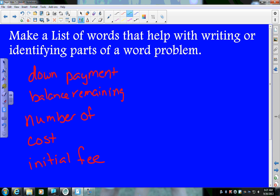A lot of times when you're talking about down payment, balance remaining, initial fee, those things are your constant. That's the thing you're starting with. Okay, those are very important words. Now, we'll start seeing some more of these. These are just some ideas of what you could be seeing that you're going to want to make sure and pay attention to.